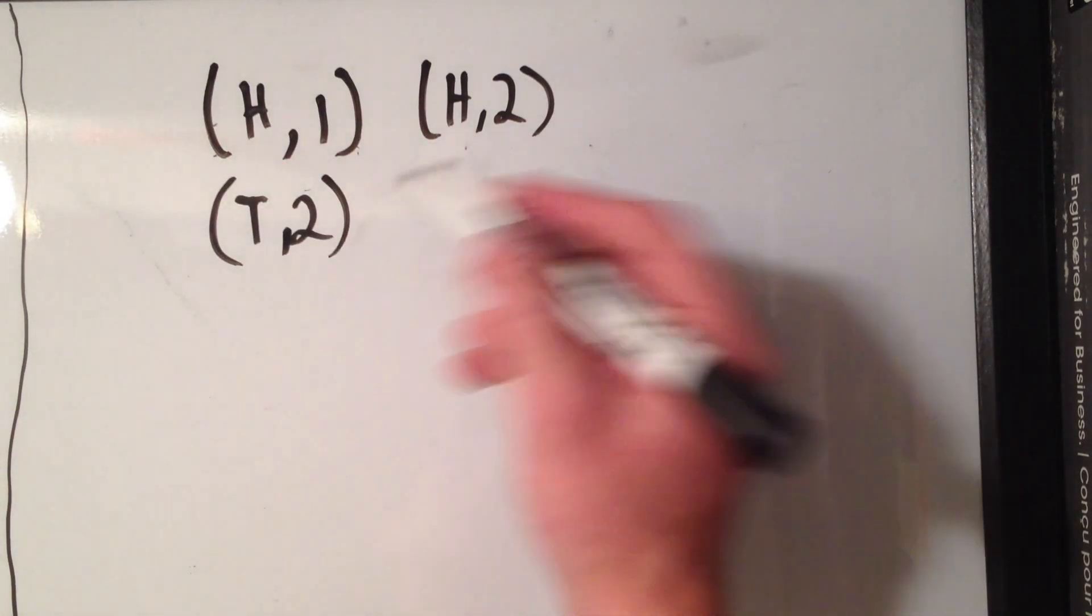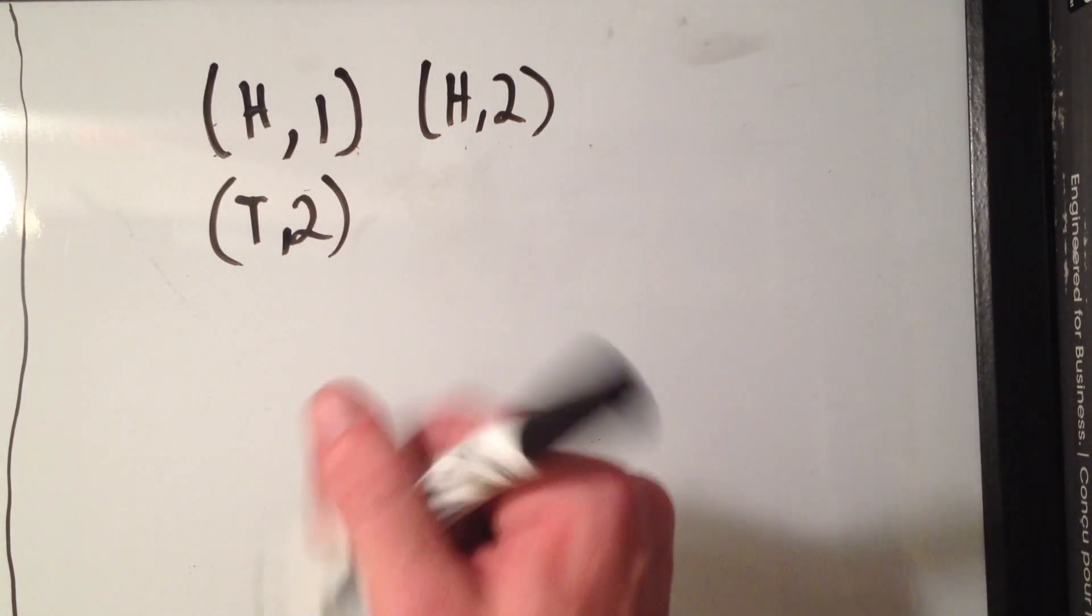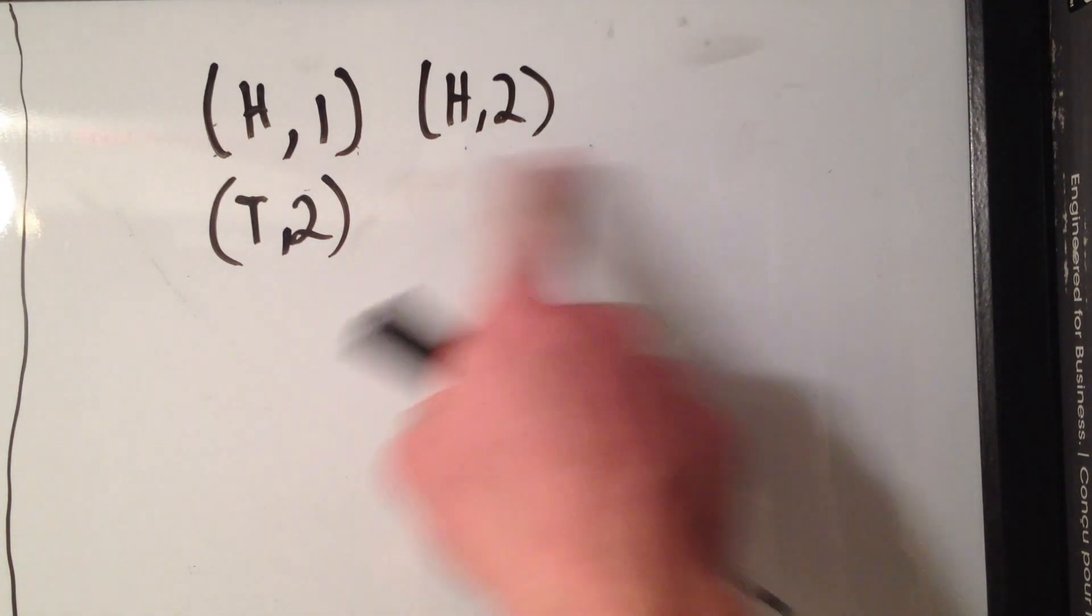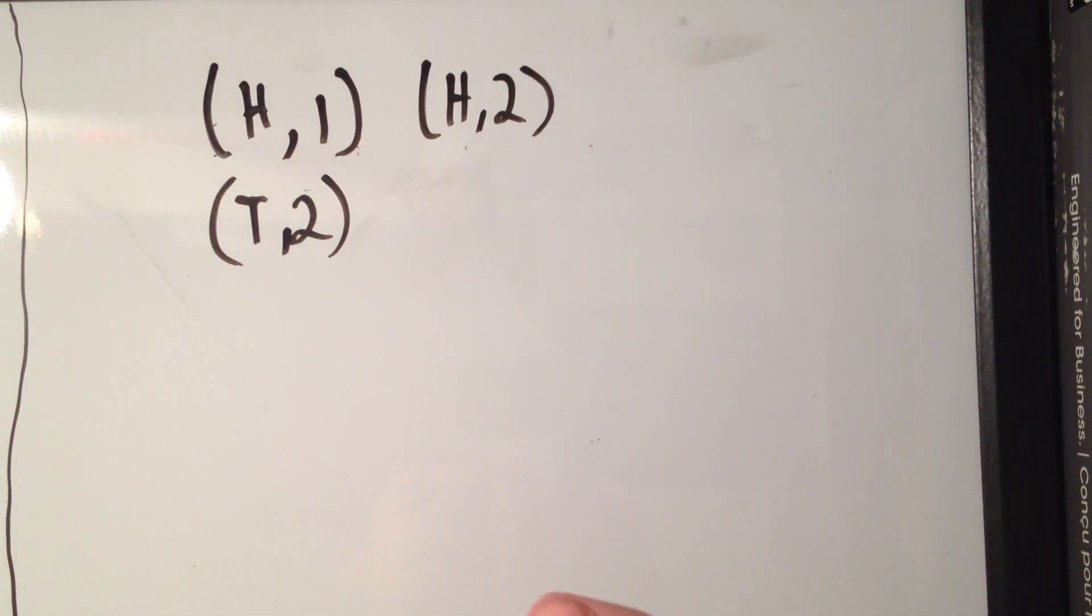And you could see you would write this out and for this case we could write them all out and that wouldn't be too bad. But say you wanted to roll ten die and flip a hundred coins, you wouldn't really want to write out all the cases and count them up. So obviously the point of this video, there's an easier way to go about this.